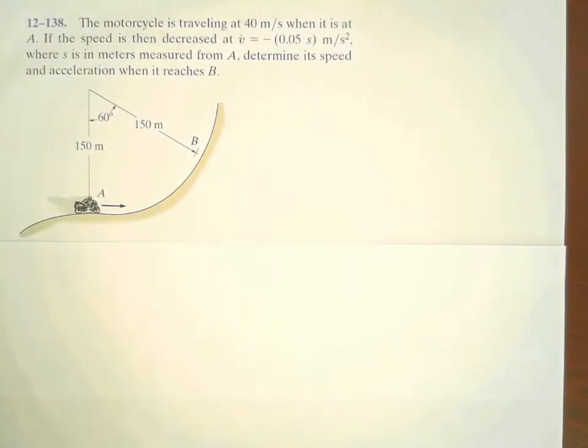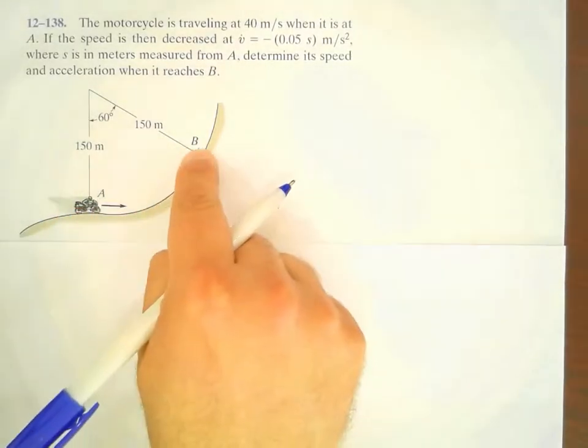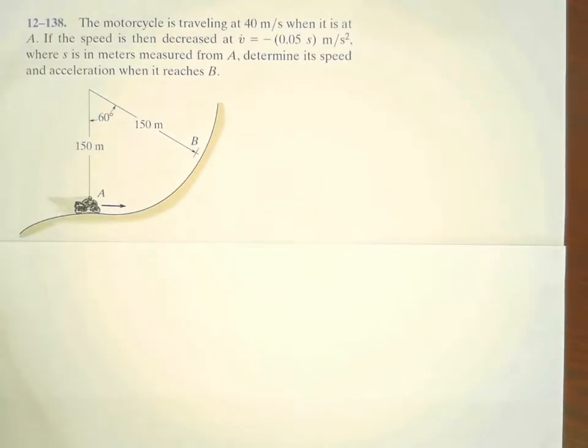You can see here that the angle between point A and point B is 60 degrees, and the radius of curvature is the same, is 150 meters.